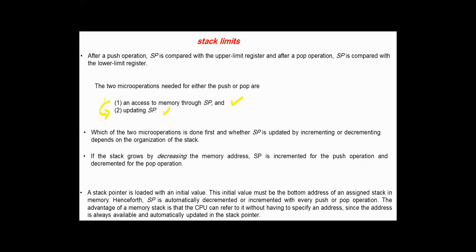Which one of these two micro-operations is done first, and whether the stack pointer is updated by incrementing or decrementing, depends on the organization of the stack. If the stack grows by decreasing the memory address, the stack pointer is decremented for the push operation and incremented for the pop operation. The advantage of a memory stack is that the CPU can refer to it without having to specify an address, since the address is always available and automatically updated in the stack pointer.